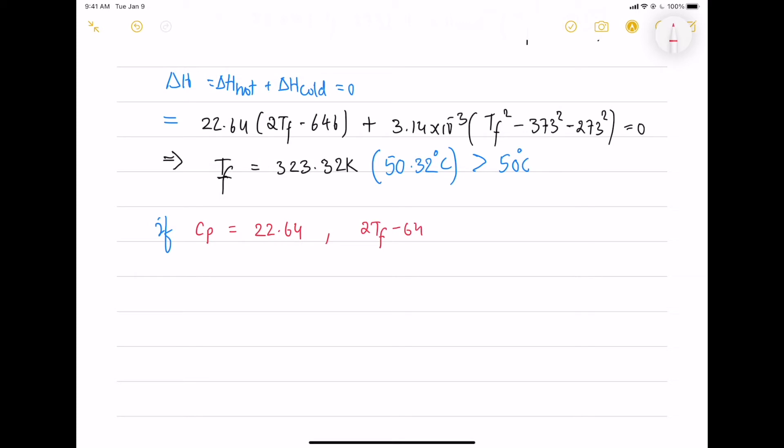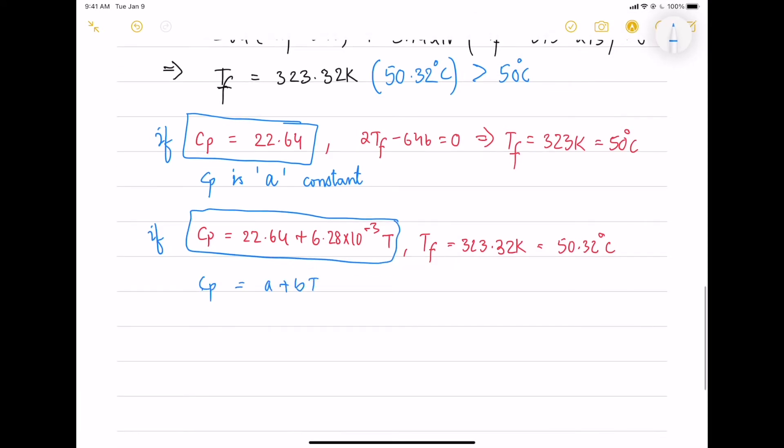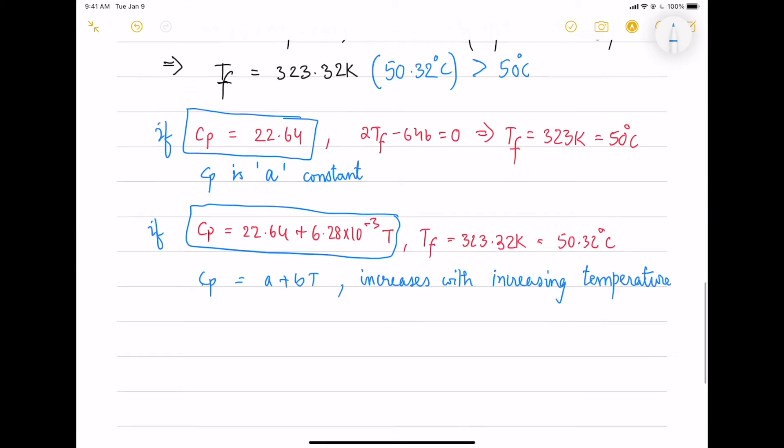If CP is a constant value, we will have final temperature to be 50 degree Celsius. Let's take it as A 22.62 and if you take CP as plus some DT term, we will have this actual result. Here the CP increases with increasing temperature. We have to keep this in mind.